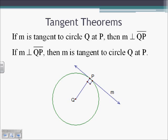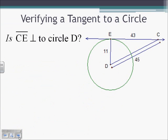If M is tangent to circle Q at P, then M is perpendicular to QP. If M is perpendicular to QP, then M is tangent to circle Q at P. These are tangent line theorems. So we know if angle QPM is going to be a right angle, then line M is going to be a tangent line, and that goes the other way as well. If line M is a tangent line, that angle of the intersection between the radius and the point of tangency must be a right angle.